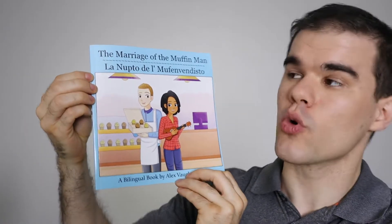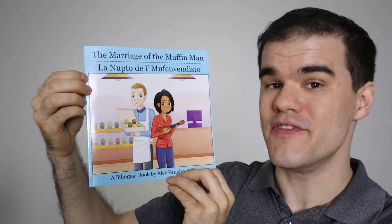Today we're looking at a few different Esperanto words which, when translated into English, would have something to do with copying or copies of something. We're going to start off though with a quick little plug for my latest children's book, The Marriage of the Muffin Man, or La Nupto del Muffin Vendisto.